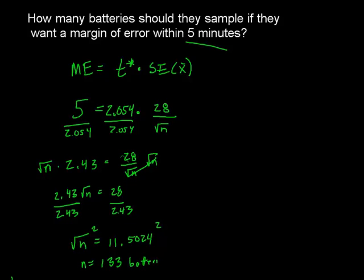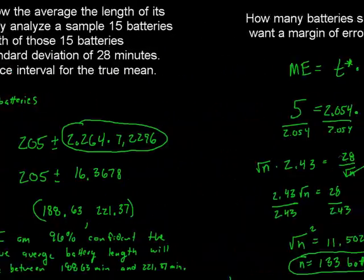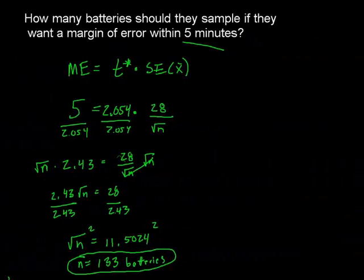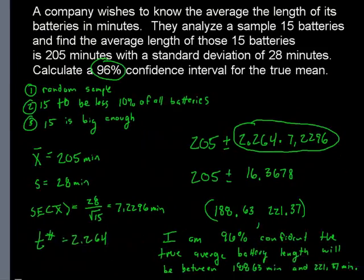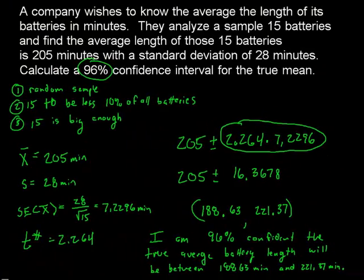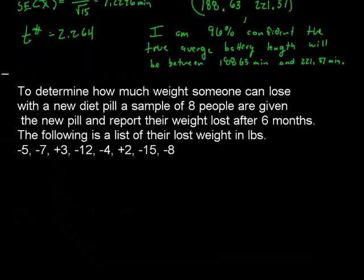So notice, to get my margin of error to go nice and low, all the way down to five minutes instead of the huge 16 that was over here, I'm going to have to sample quite a few more batteries, 133 batteries. So hopefully that makes sense. A little bit weird there with having to use z. And that's only because, I mean, what the heck do I use for t? I don't even know my sample size yet.